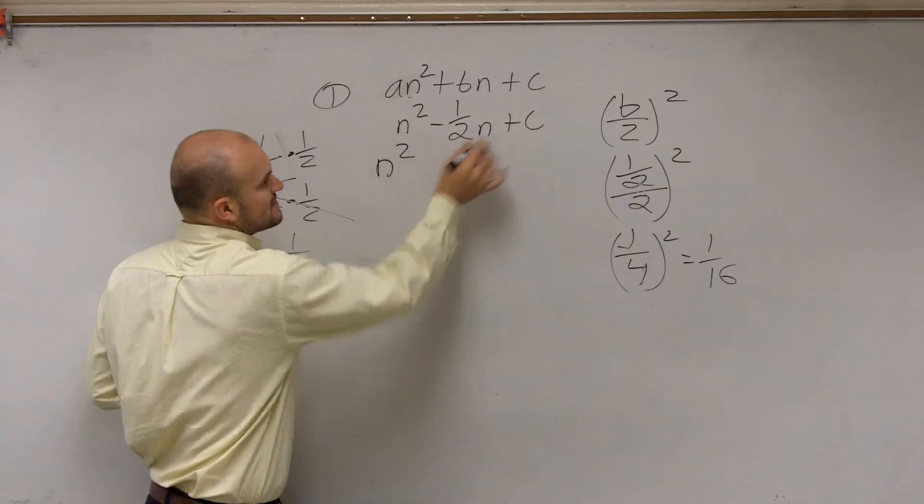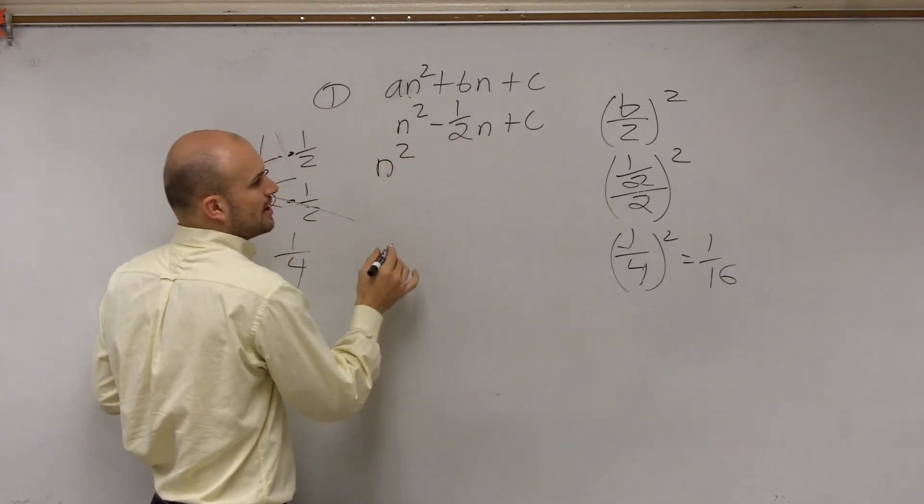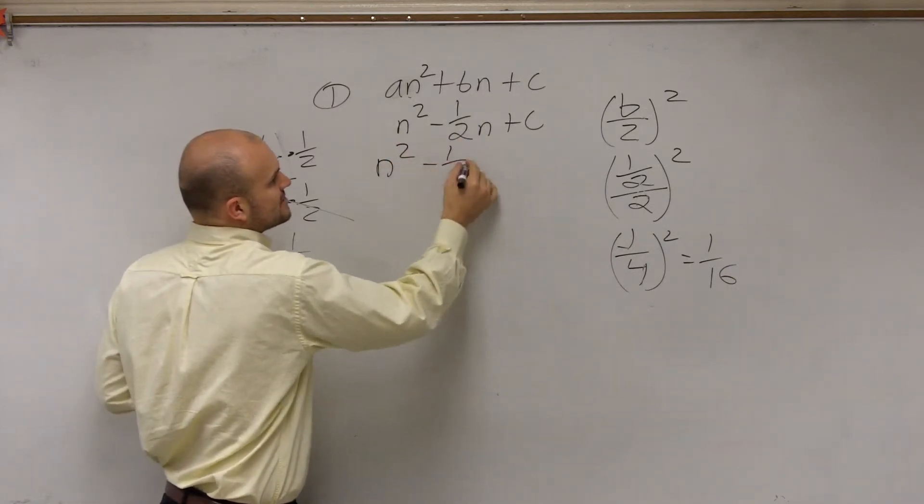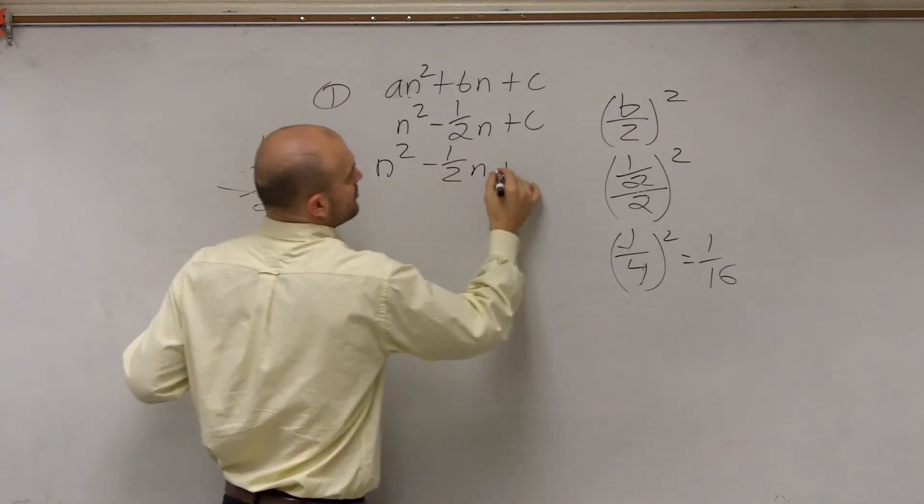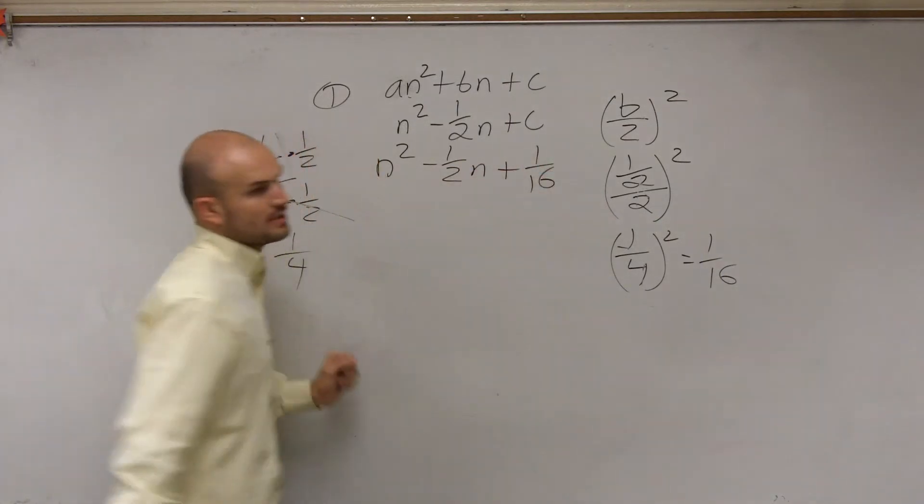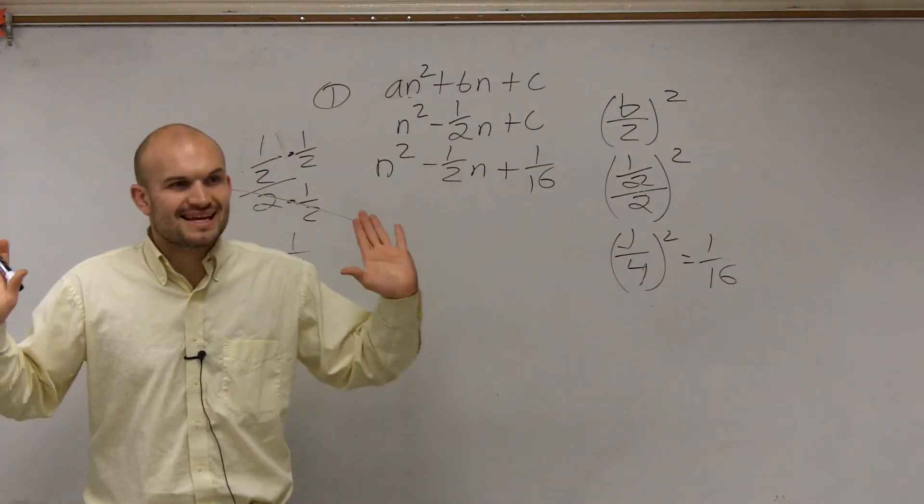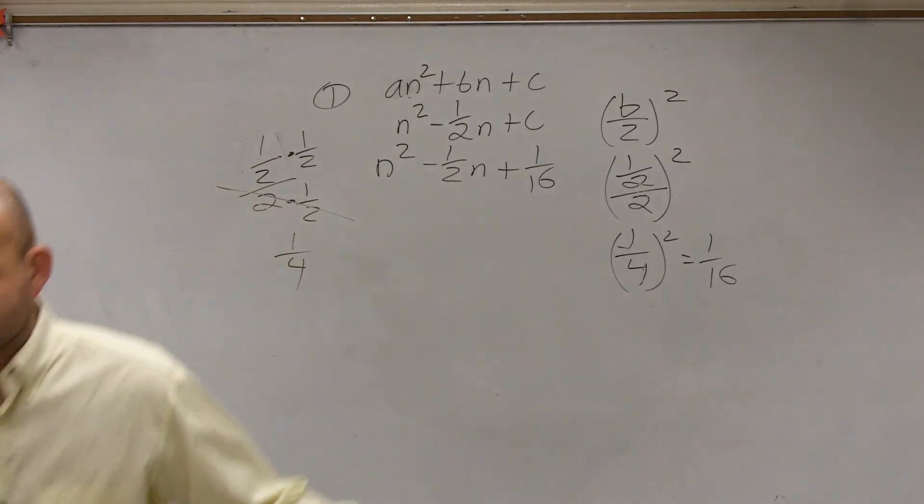So therefore, we could say the value of c that is going to complete our square is n squared minus 1 half n plus 1 over 16. So for part 1 of these problems, that's all you had to do.